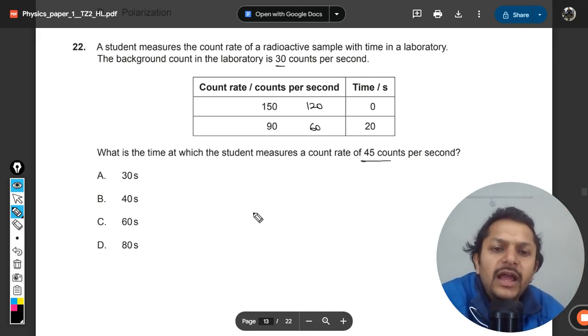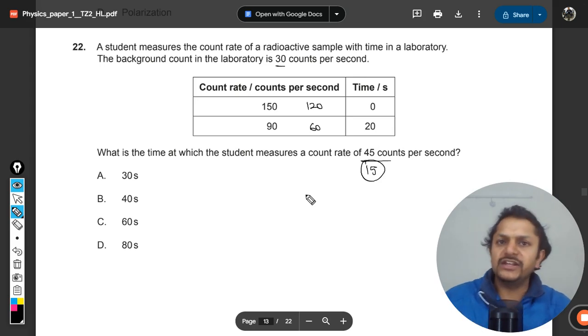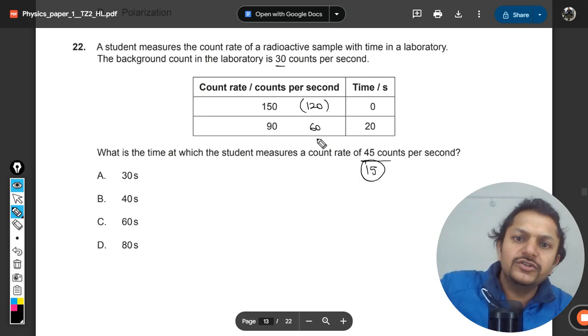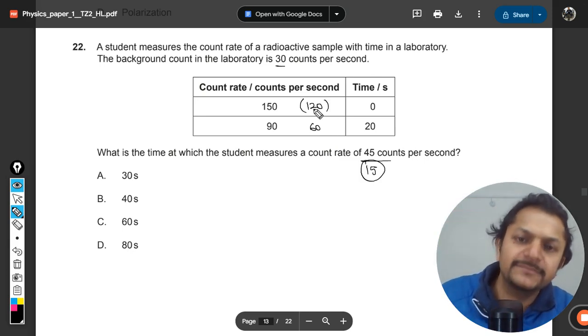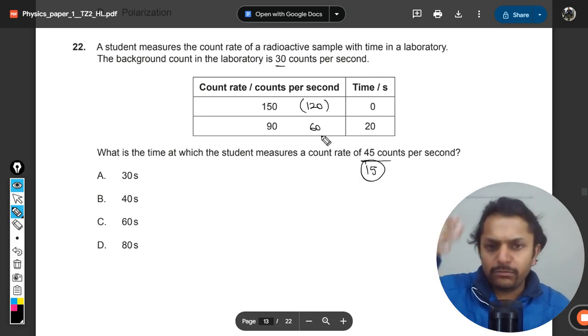And here 45 minus 30 will be 15. So 15 is the number of disintegrations you are looking forward to. 120 is the initial number of disintegrations. You can say it started with this and 60 is the disintegration that was coming down.